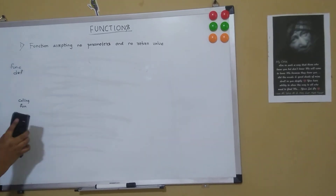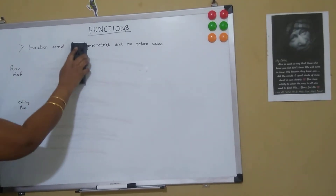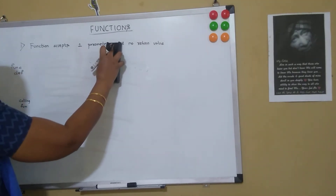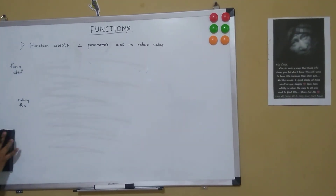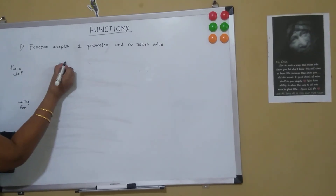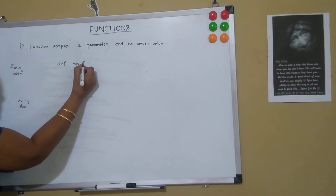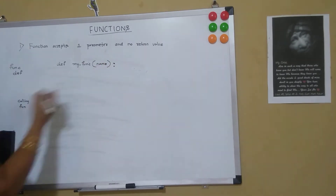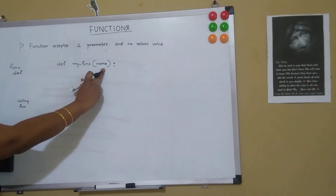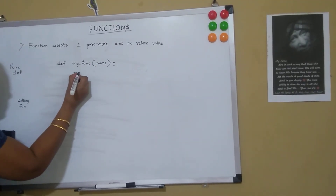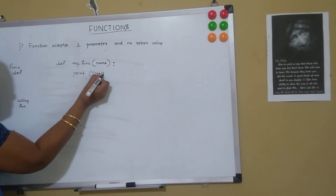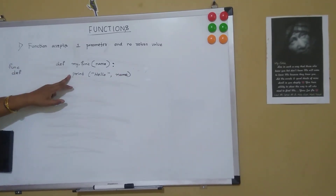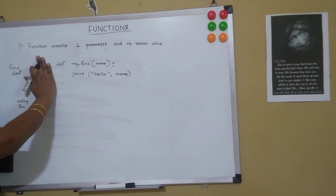Now let's look at another code example where a function accepts one parameter and no return value. Suppose I say: def my_function, accepting one parameter called 'name', then a colon. So my_function is accepting one parameter 'name'. Then I say: print 'hello' and then name. This is a function statement so it has to be indented.